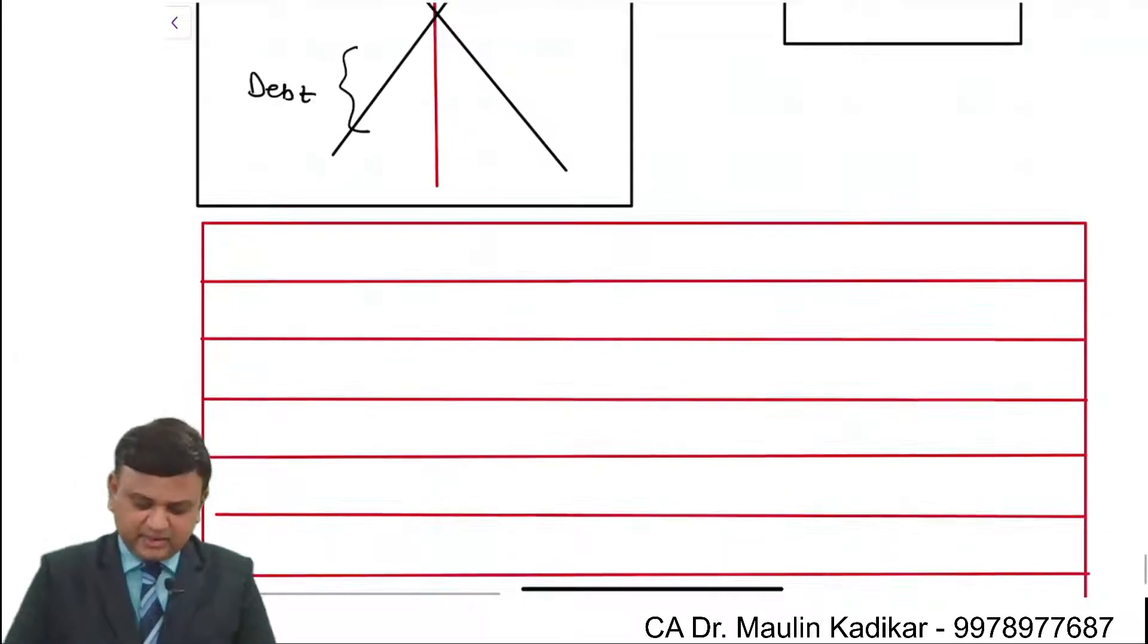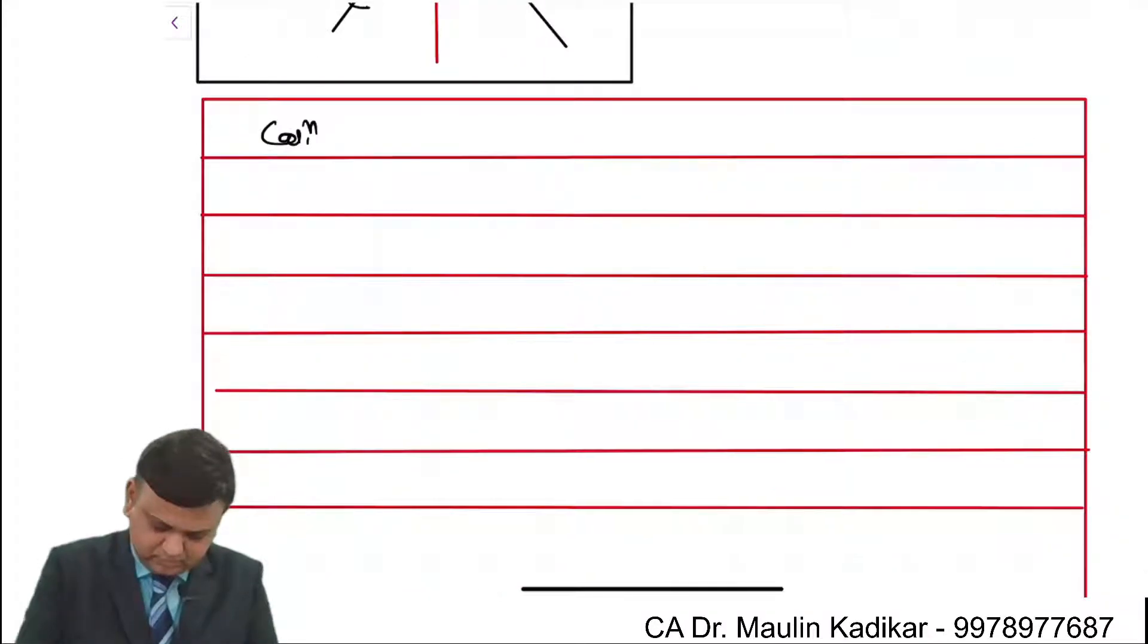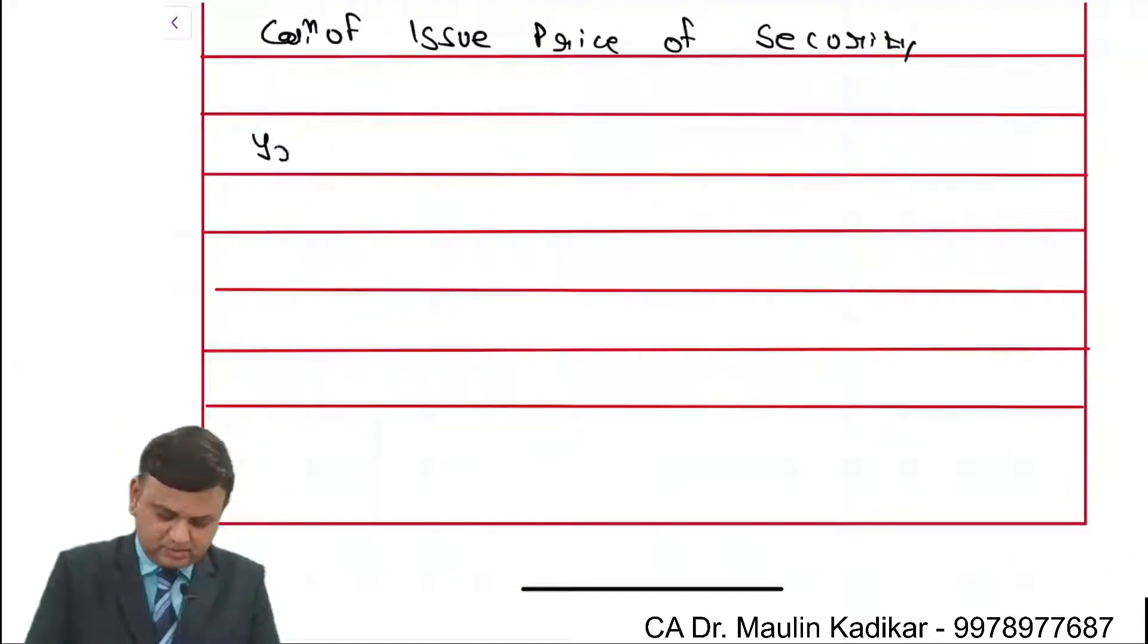So written heading calculation of issue price of security. Let us understand how to calculate it. Year 1, year 2, year 3.